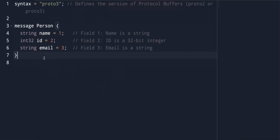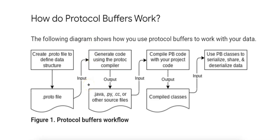This schema specifies the structure of a message, which the protobuf compiler uses to generate code in the desired language — for example, Python, Java, C++, or Go. Going back to this diagram, you can see that we created a .proto file to define the data structure. This serves as the input to the protoc compiler, which generates the code. The output is source files, like Java, Python, or C++. The generated code consists of classes or structs that represent the data structure you defined in the .proto file.